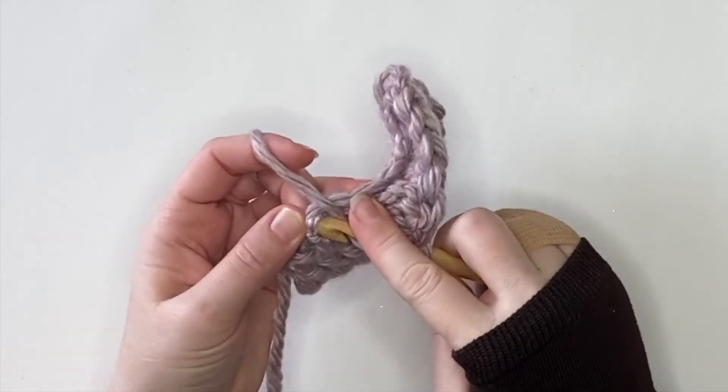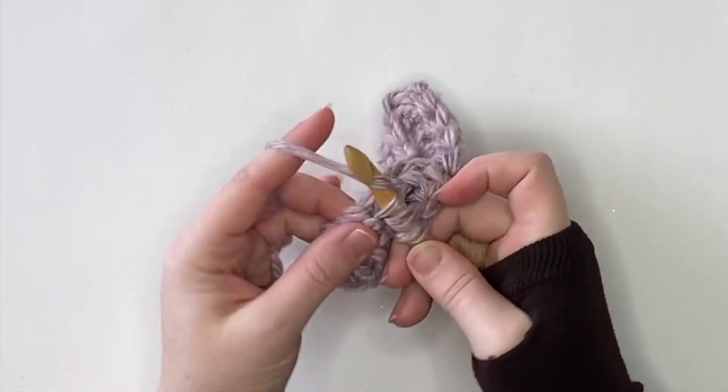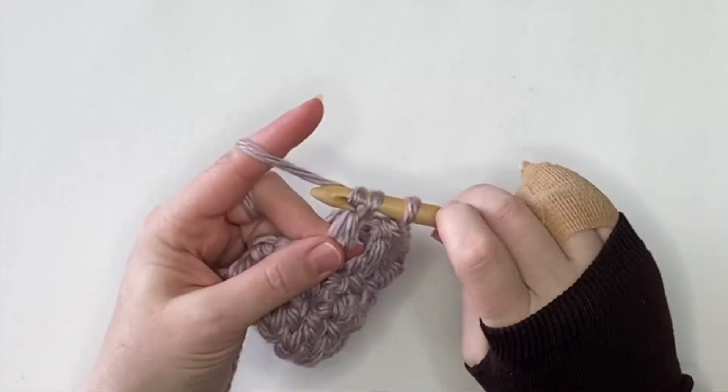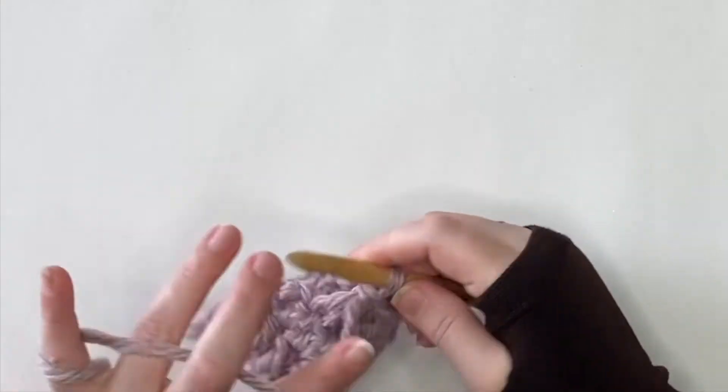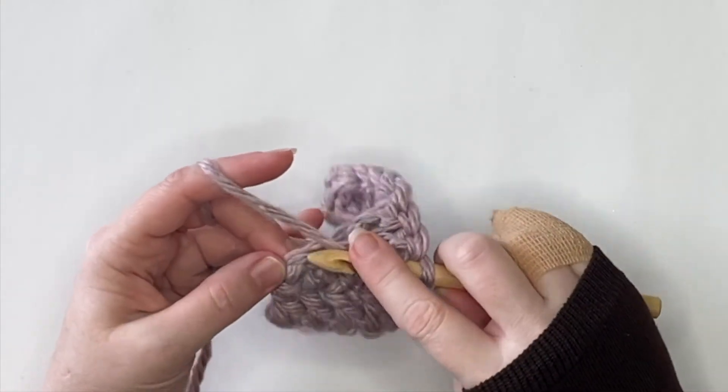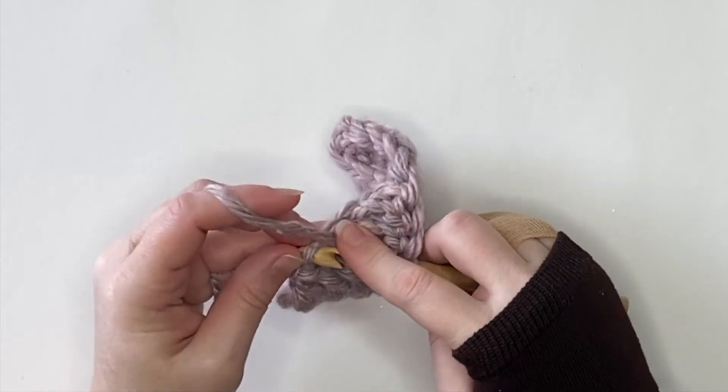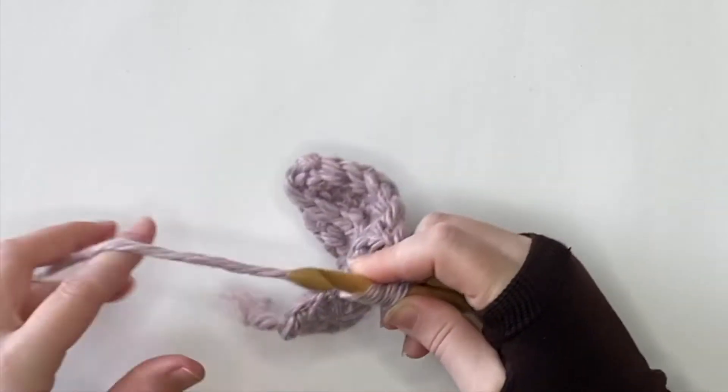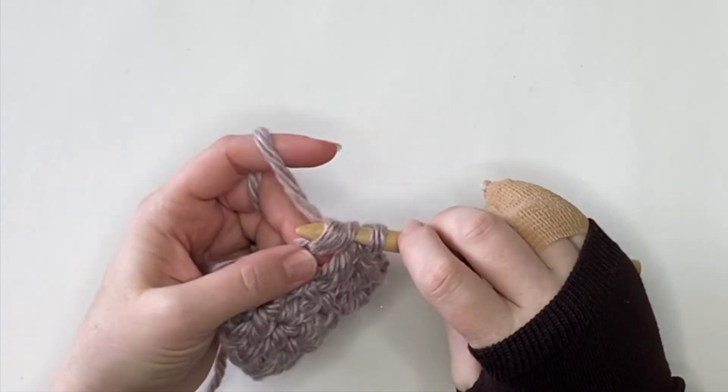So we're just going to continue that same stitch, repeating row two of just your standard double crochet, and then row three, which is the double crochet in the third loop, for 24 times so that you end up with 49 rows. So get ready, because your scarf is going to be done that fast.